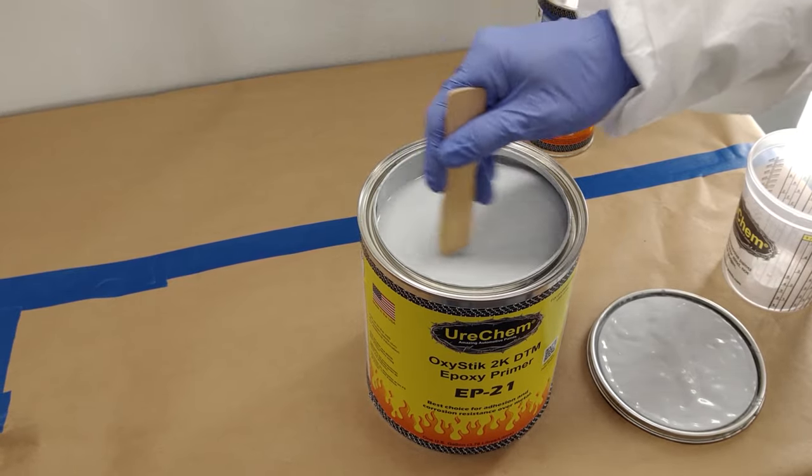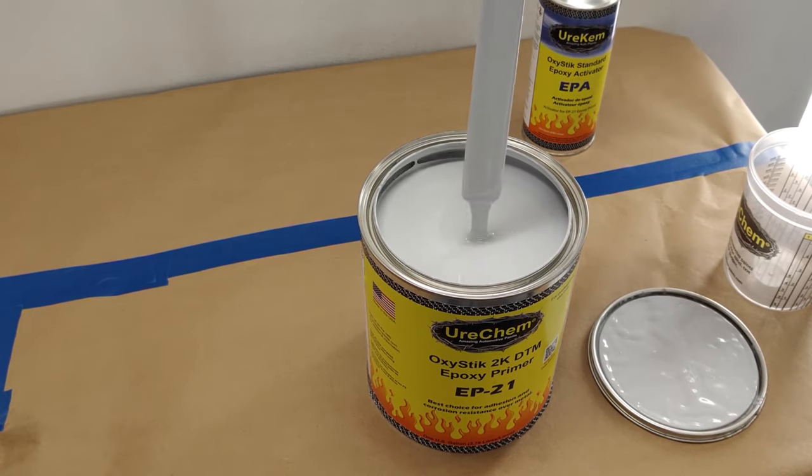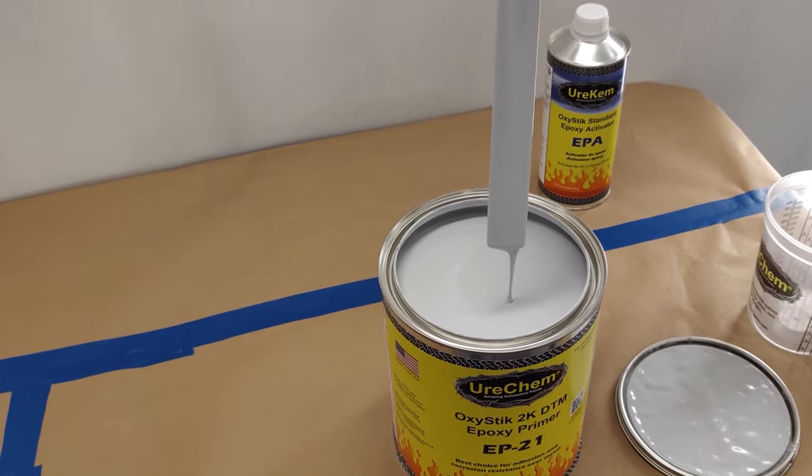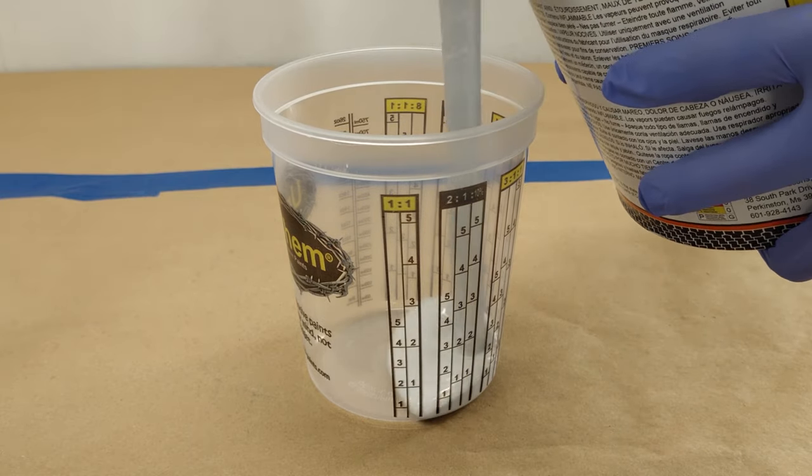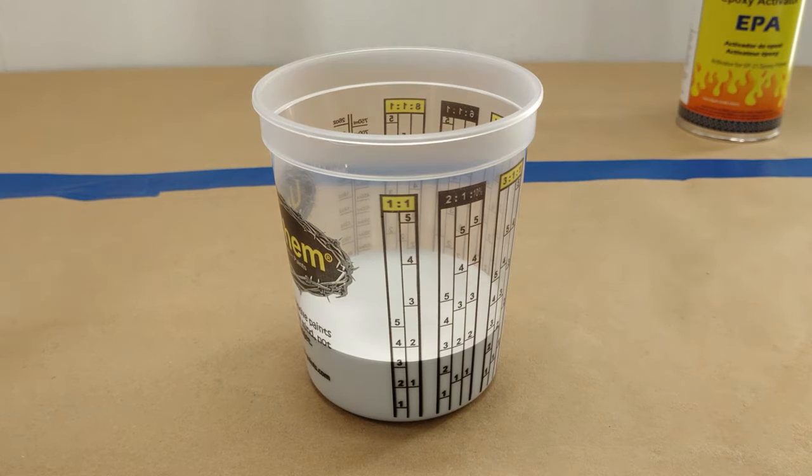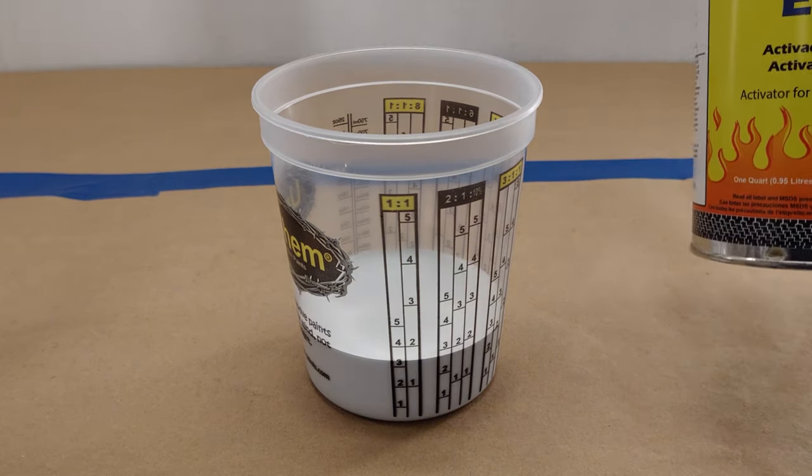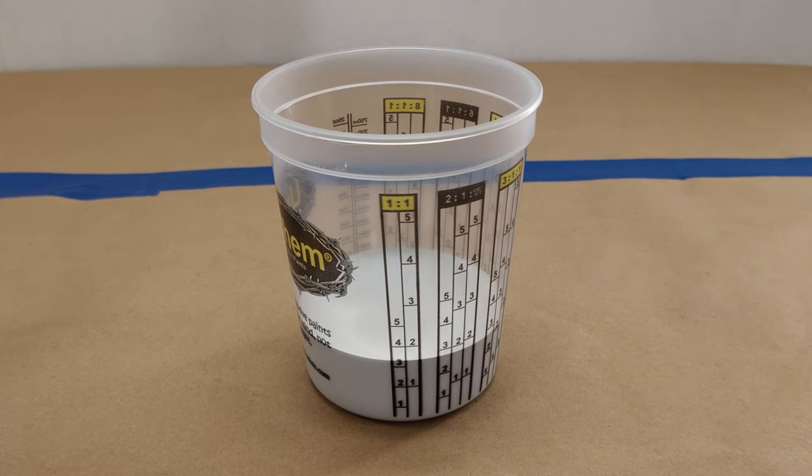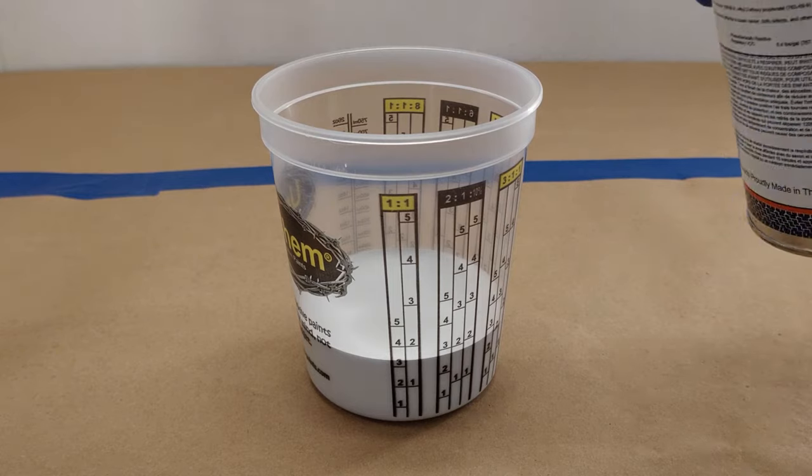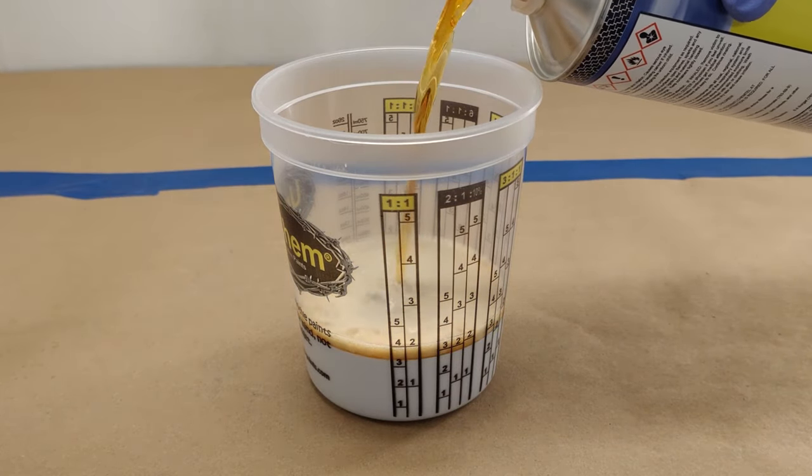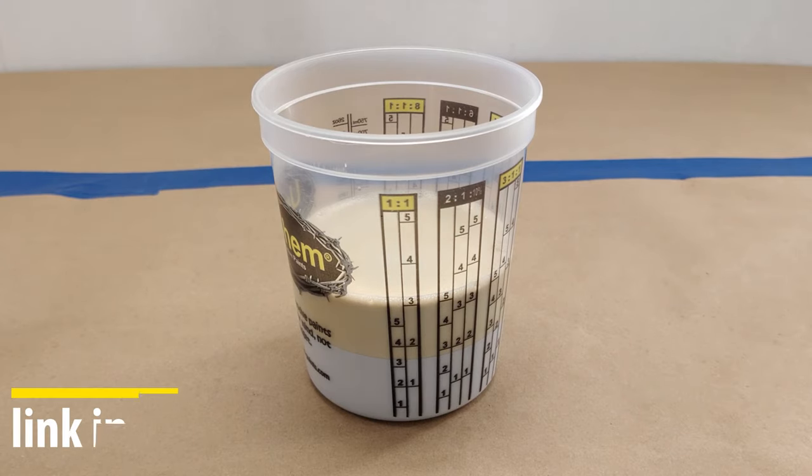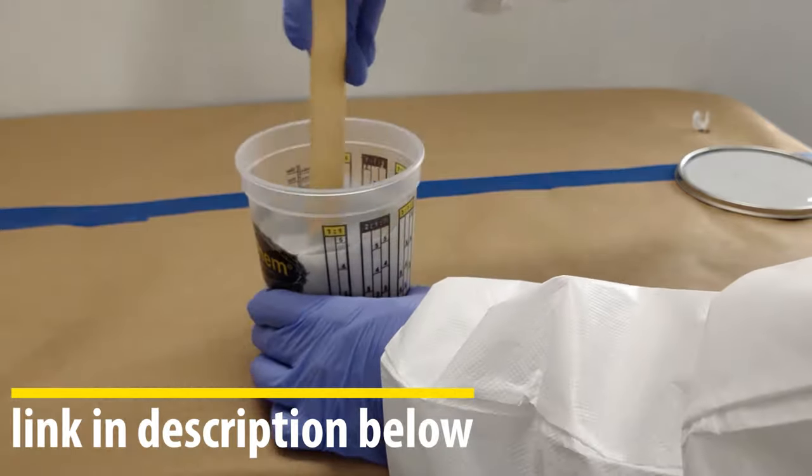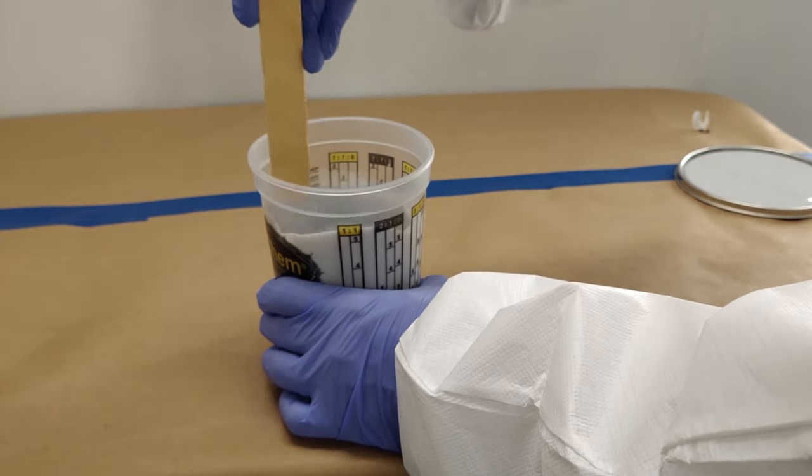OxyStick EP21 mixes one-to-one by volume with EPA activator. Eurochem branded mixing cups have a column specifically for a one-to-one mix ratio. Simply pour the desired amount of primer to the number in the one-to-one column you select based on how much material you need. Then add EPA activator slowly on top of that to the corresponding number working left to right in the column. So if you fill primer to the number three, you will fill the EPA to the number three in the row immediately to the right. The numbers in the mixing column do not relate to volume, they are simply reference points. For more information on paint mixing cups refer to our video on how to use Eurochem paint cups. An additional 10% Eurochem urethane reducer can be added if you would like.